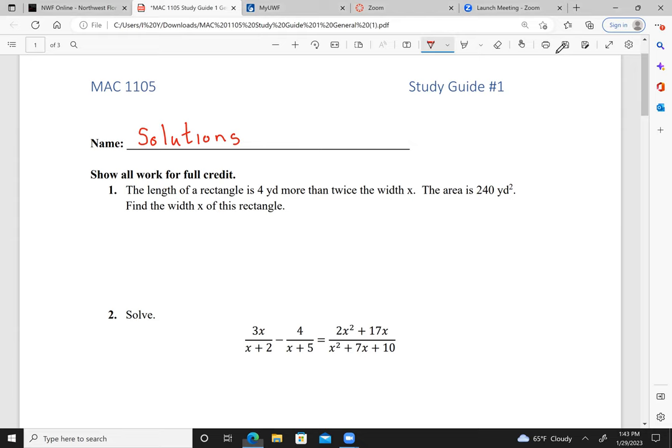So I have a rectangle. My width is x. My length is four plus twice the width. The formula for area of a rectangle is length times width. So now I have 2x plus 4, which is the length, times x equals the area, which is 240. And this is 2x squared plus 4x equals 240.